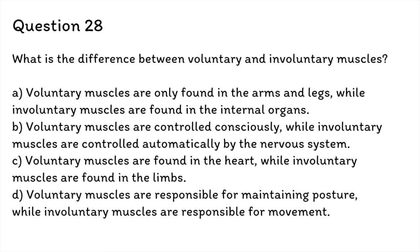Question 28: What is the difference between voluntary and involuntary muscles? A. Voluntary muscles are only found in the arms and legs, while involuntary muscles are found in the internal organs. B. Voluntary muscles are controlled consciously, while involuntary muscles are controlled automatically by the nervous system. The correct answer is B. Voluntary muscles are under conscious control — they are controlled by the brain and can be moved at will. Involuntary muscles are controlled automatically by the nervous system and cannot be consciously controlled.